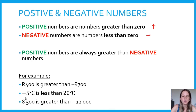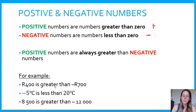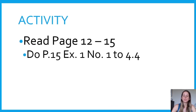Negative 5 degrees Celsius would be colder than 20 degrees Celsius — it is less than 20 degrees. And 8 500 is greater than negative 12 000. Even though the number sounds bigger, because it has a negative in front of it, it is actually smaller. You can now do this activity — it is on page 15. Go through pages 12 to 15 to recap what we just did. It's exercise 1, numbers 1 to 4.4.